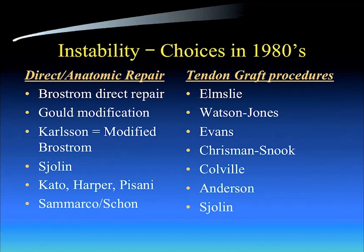As I look back on how I've dealt with inversion instability since I began my practice in the mid-1980s, the choices for dealing with chronic inversion instability included direct anatomic repairs — the Brostrum, the Gould modification, the Carlson modification — and tendon graft procedures: Elmsley, Watson-Jones, Evans, Chrisman-Snook, Colville, and others.